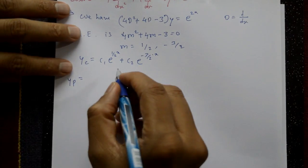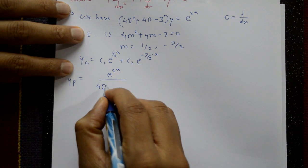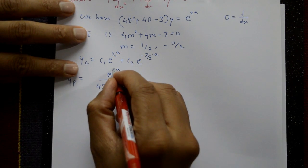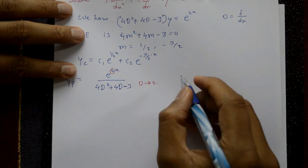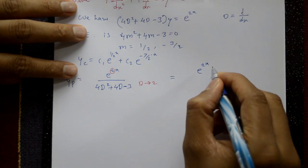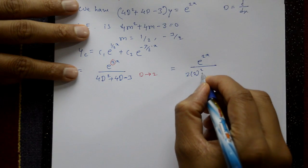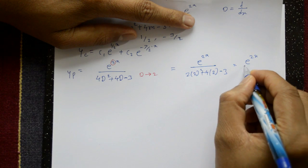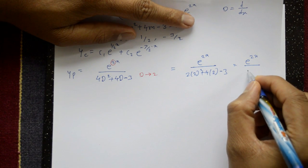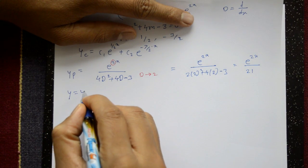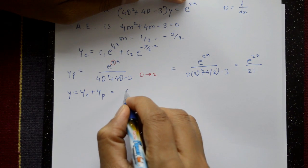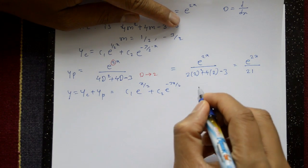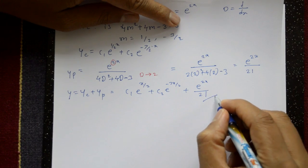For the particular integral, yp = e^(2x) / f(D), where f(D) = 4D² + 4D - 3. Since a = 2, put D = 2: yp = e^(2x) / (4·4 + 4·2 - 3) = e^(2x) / 21. The complete solution is y = c₁e^(x/2) + c₂e^(-3x/2) + e^(2x)/21.